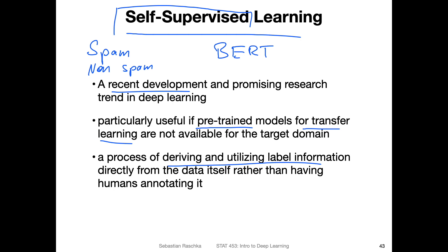In the case of BERT, what the researchers do is they mask — I think it's 15% of the words. They give the model some text from the internet, remove 15% of the words, and let the system predict those words. You are withholding the labels, but using the data itself as label information. You have a sentence, you remove parts of it, and you have the model predict those parts — but you know what the correct labels are. In that way, you can teach the machine.